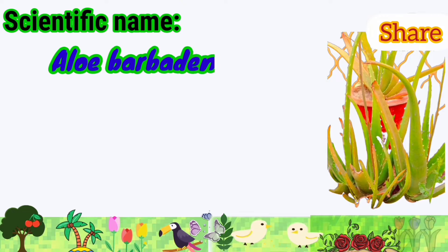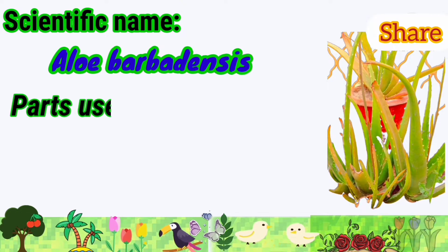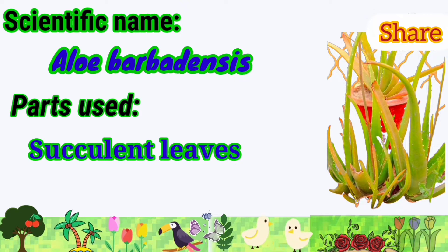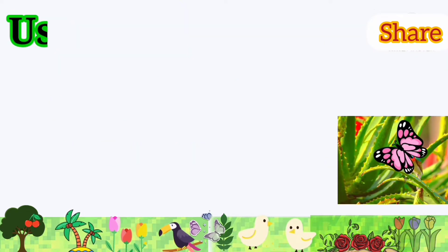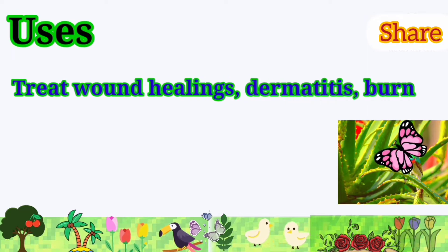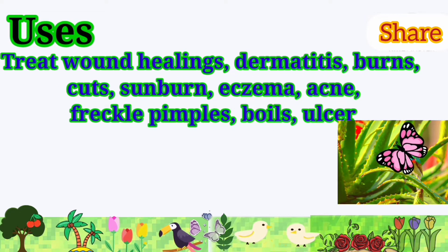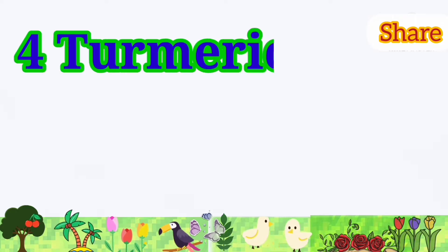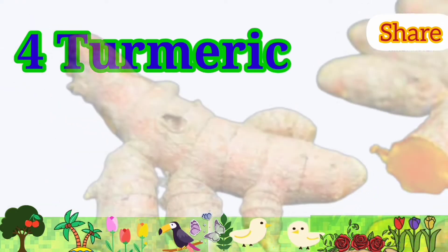Aloe Vera: its scientific name is Aloe barbadensis. Parts used are the succulent leaves. It is used to treat wound healing, dermatitis, sunburn.